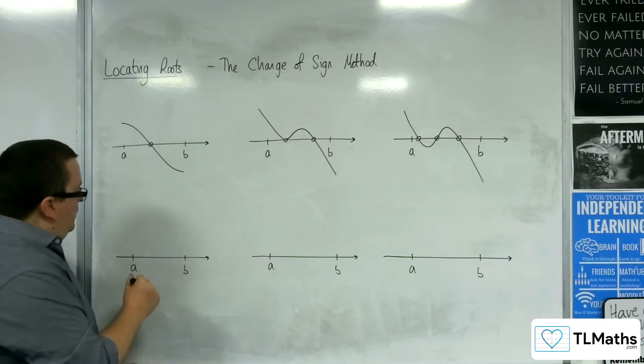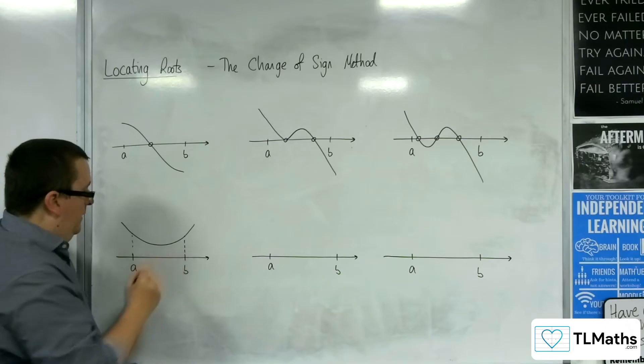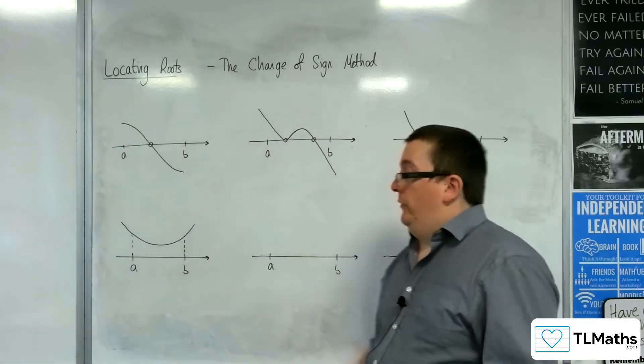So you could have that the curve does something like this. So there is no change of sign, but the curve is continuous. But there are no roots.